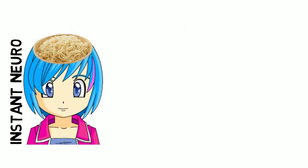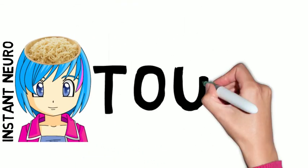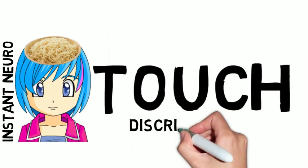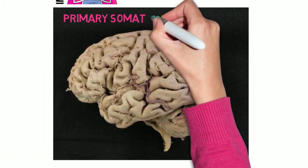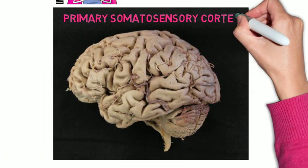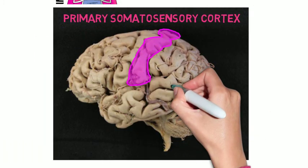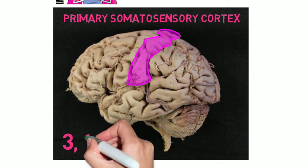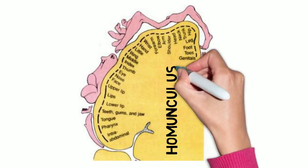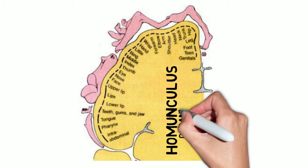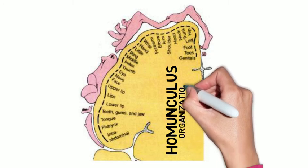The primary somatosensory cortex is located in the postcentral gyrus and contains Brodmann's areas 3, 1, and 2. The primary somatosensory cortex has a homunculus organization, with the face represented laterally and the lower limb more medially.